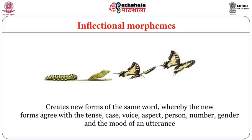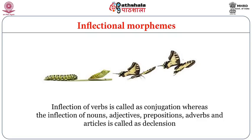Inflectional morphology creates new forms of the same word, whereby the new forms agree with tense, case, voice, aspect, person, number, gender, and the mood of an utterance. Inflection of verbs is called conjugation, whereas the inflection of nouns, adjectives, prepositions, adverbs, and articles is called declension.